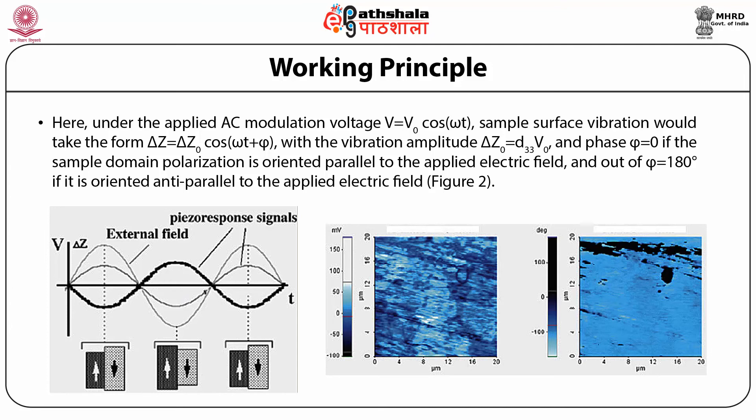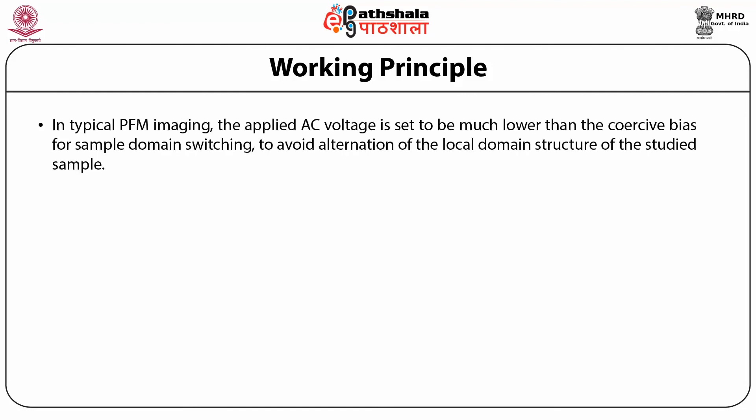Such oscillation is directly reflected in the amplitude and phase signal of the AFM probe contacting the surface and can be read using a lock-in amplifier. In typical PFM imaging, the applied AC voltage is set to be much lower than the coercive bias for sample domain switching, to avoid alteration of the local domain structure of the studied sample. If such criterion is met, the phase contrast generated in PFM imaging will reflect the domain polarity in different sample locations, while from the magnitude of the amplitude signal, the local piezoelectric coefficient of the sample can be extracted.